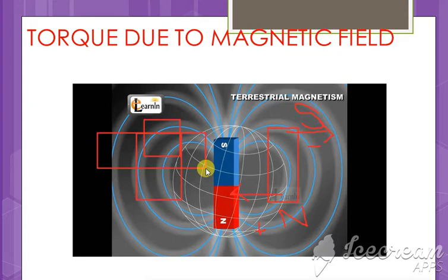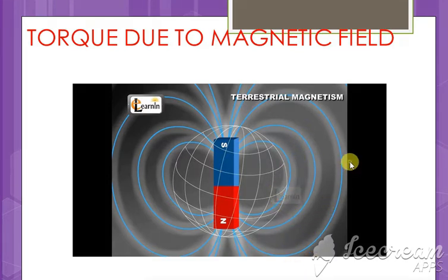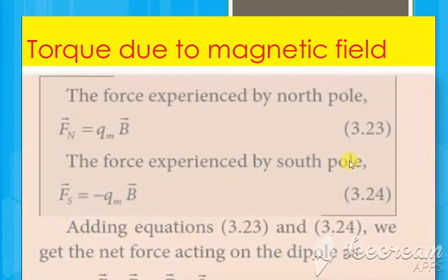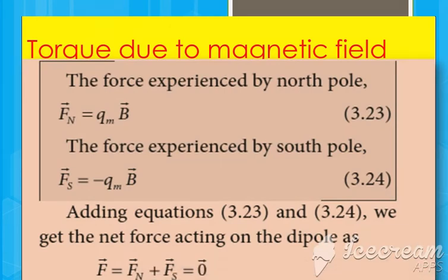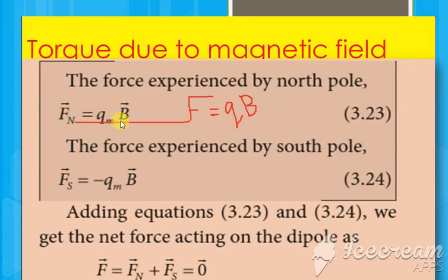That is torque. Now let's see the values and the formula. For torque, there are two regions that experience a force. The torque due to the magnetic field is the force experienced by the north pole and the force experienced by the south pole. The general formula for force is F = Q × B. For the north pole we write Fn = Qm × B, and for the south pole Fs = −Qm × B, since it acts in the opposite direction.